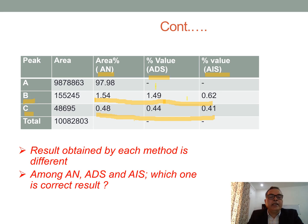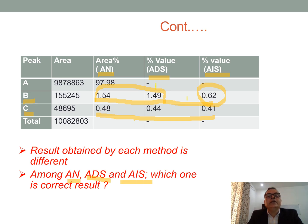From the results, it is clear that the results obtained by the AN and ADS methods are different from the AIS method. The question now comes: among the AN, ADS, and AIS methods, which one is the correct method?